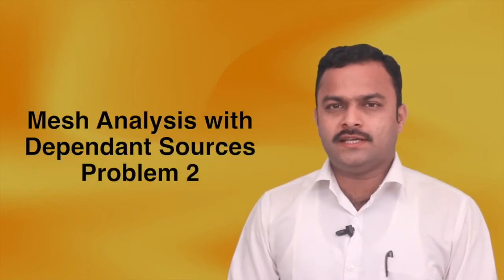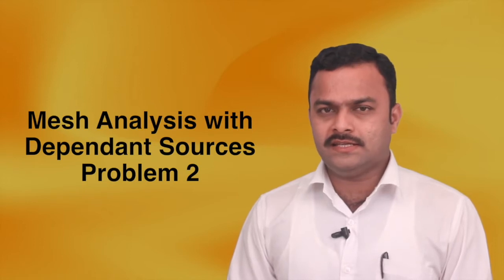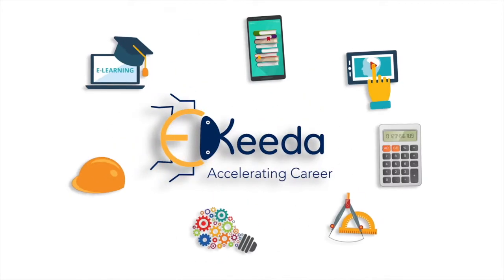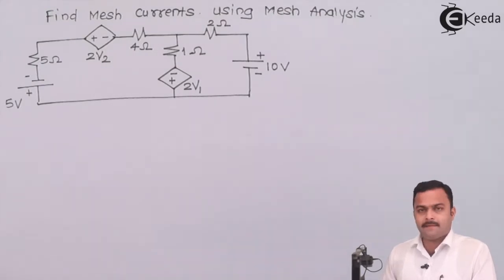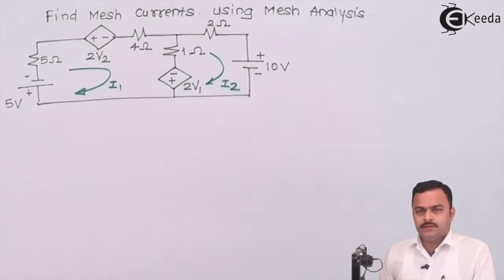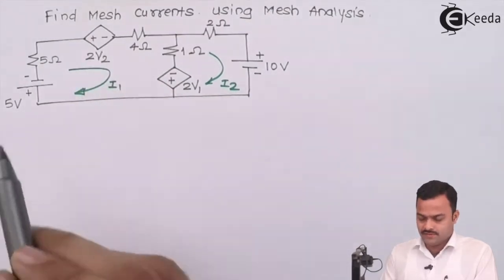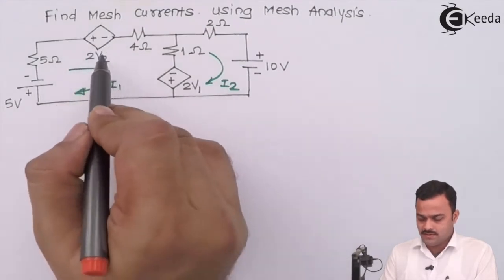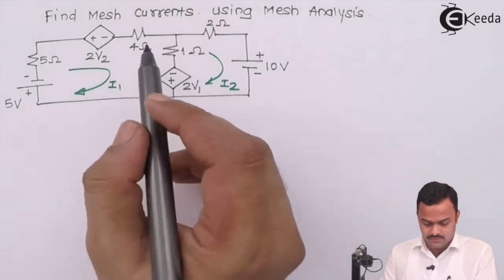In this video we are going to see a problem where we have to get mesh currents using mesh analysis when a dependent source — precisely a voltage-dependent voltage source — is given. The problem is to find mesh currents I1 and I2 using mesh analysis for the given circuit. We have two dependent voltage sources, and the voltages on which they depend need to be marked as V1 and V2.